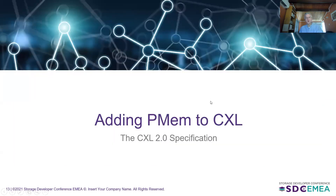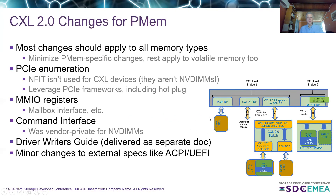Let's talk about what we added to the CXL specification to support persistent memory. As a high-level summary: we wanted to make sure that as we added things applying to persistent memory devices, if these ideas also applied to non-persistent memory devices, we didn't have two versions of them. There shouldn't be one way of identifying a volatile memory device and another way of identifying a persistent memory device. So most of the changes apply to all memory devices, and we only made PM-specific changes when it really made sense to.